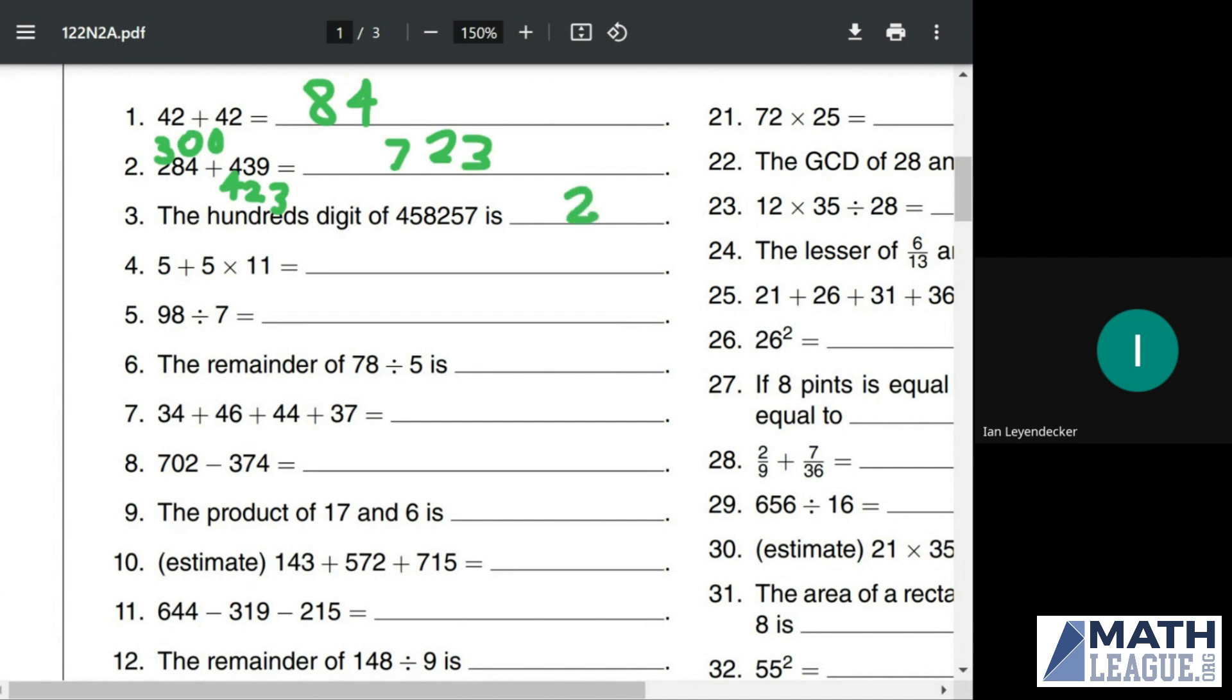5 plus 5 times 11. You can solve that by saying that 5 times 11 is 11 instances of 5 added together, and this extra 5 here is just one more instance of 5 for a total of 12 instances of 5. So 5 times 12, or 60.